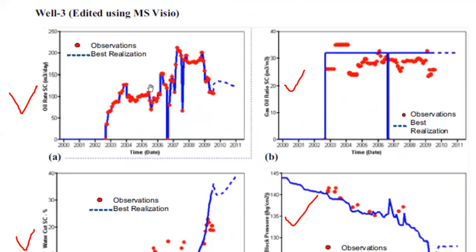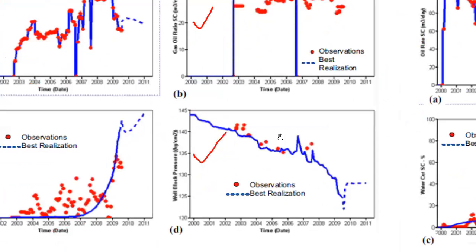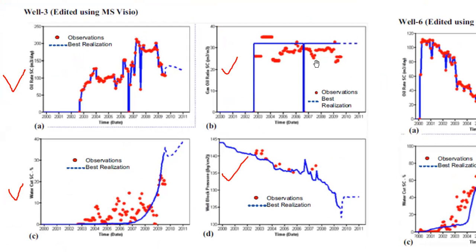For the oil rate it's already a good match; water cut is more or less a good match; gas-oil ratio is not very good; pressure is already good. So you need to ask why gas-oil ratio is very difficult to match. Maybe the measurement of the gas rate is inaccurate; maybe there is a metering error or allocation error. You need to check with your operator — it doesn't necessarily mean the model is wrong; the input data may be wrong due to measurement error, improper sampling, or uncalibrated instruments in the field.